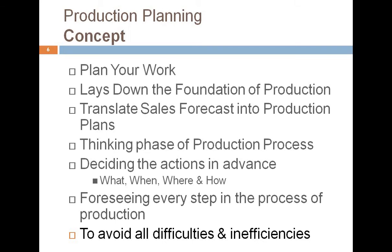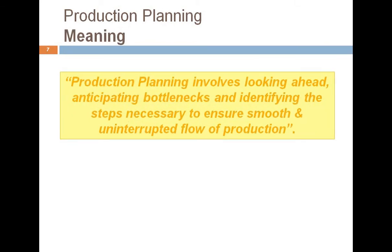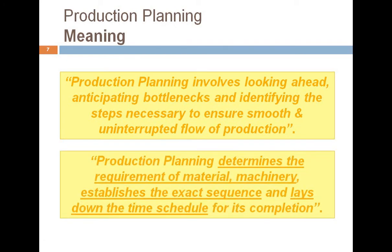The meaning of production planning is: it is the process of looking ahead, anticipating bottlenecks, and identifying the steps necessary to ensure a smooth and uninterrupted flow of production. We are looking ahead, anticipating challenges and hurdles in the production process — finding out answers to what needs to be produced, how it is to be produced, when it is required, and when we are going to produce. Once identification is done, we go to the various steps necessary to ensure smooth production. Production planning also determines the requirement of material, machinery, and manpower — the factors of production.